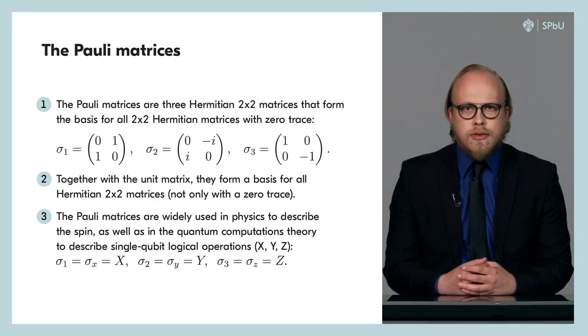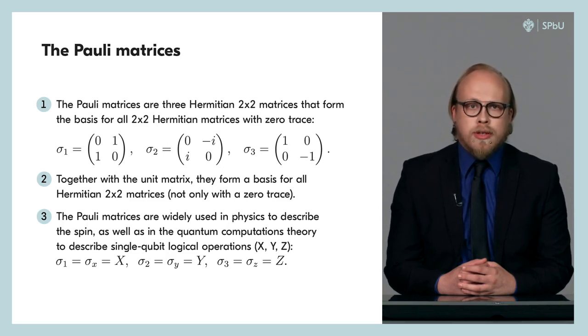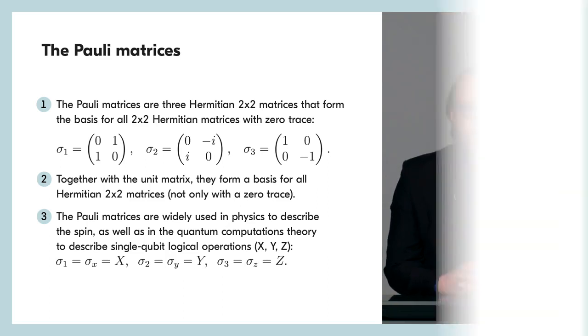In other words, any 2×2 Hermitian matrices can be represented as a linear combination of Pauli matrices. We recall that Pauli matrices are used in physics to describe particles with spin one-half, and now we will see how they are used in the theory of quantum computations to describe single-qubit logical operations.